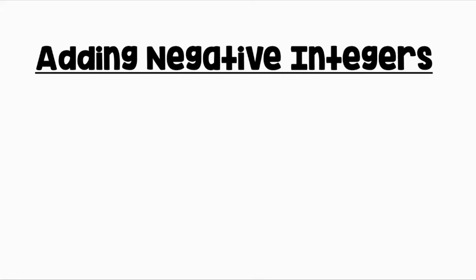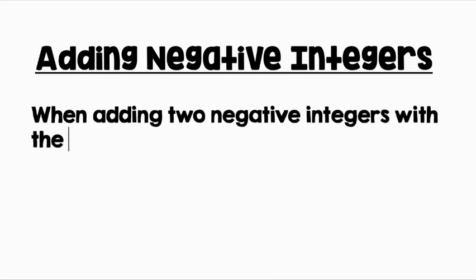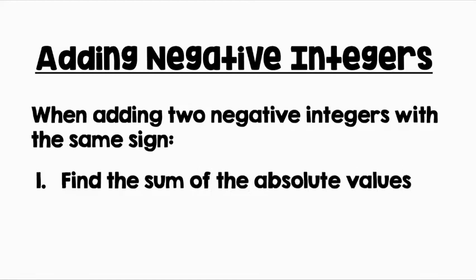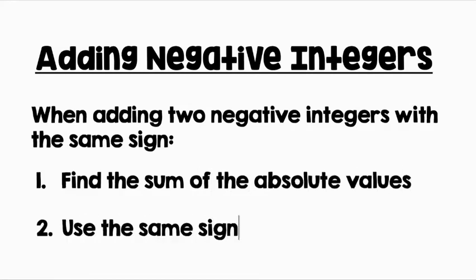Let's review our rules for adding negative integers. When adding two negative integers with the same sign, first find the sum of the absolute values. Then use the same sign as the addends.